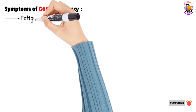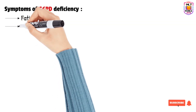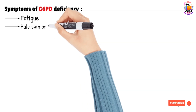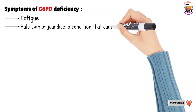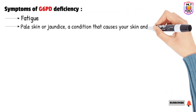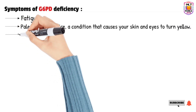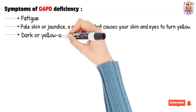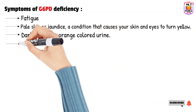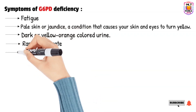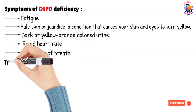First of all, there will be fatigue. There will be yellow or pale colored skin, which we call jaundice, in which the eyes and skin become yellow. Next is dark or orange-yellow colored urine, rapid heart rate, and shortness of breath.